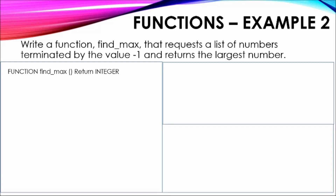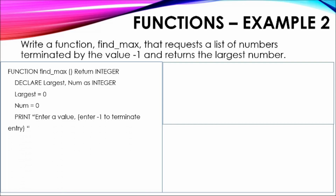The solution shows the function FindMax being defined. There are no parameters passed to the function, however there is an integer return type. Two variables are declared — largest and num — as integer, both initialized to zero. A prompt is made for the entry of a value along with the process required to terminate input. Because nothing was mentioned regarding the total number of values needed, a WHILE loop is used to repeat the process of evaluating each value. The initial value entered is evaluated to determine whether it equals -1.